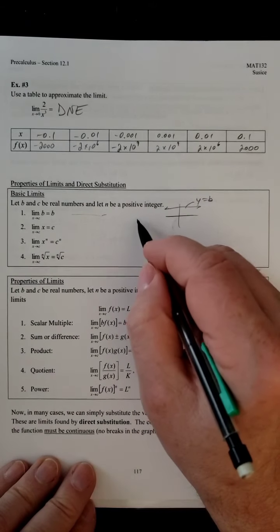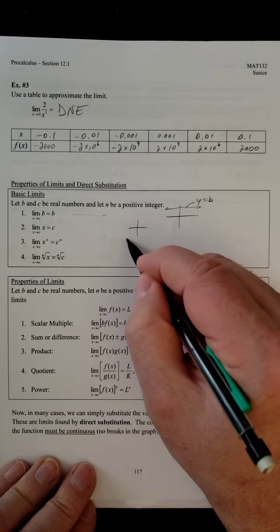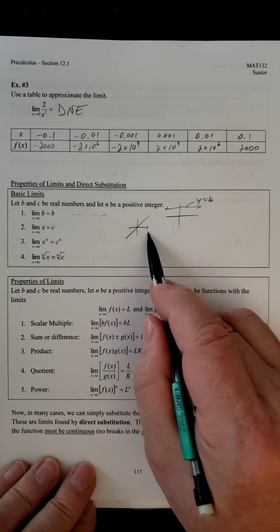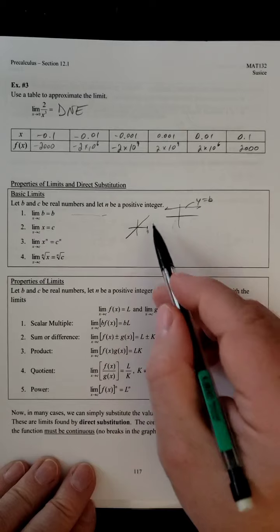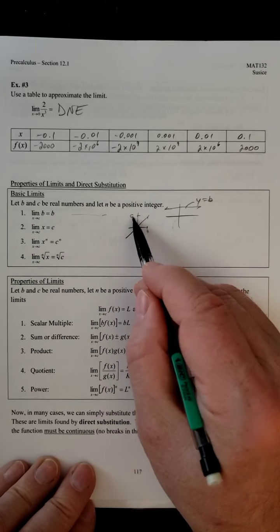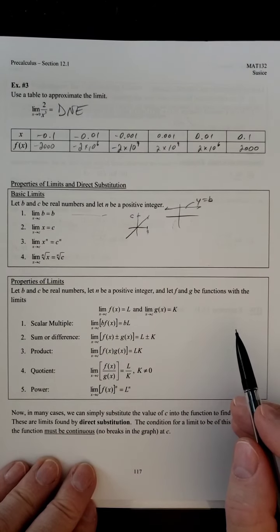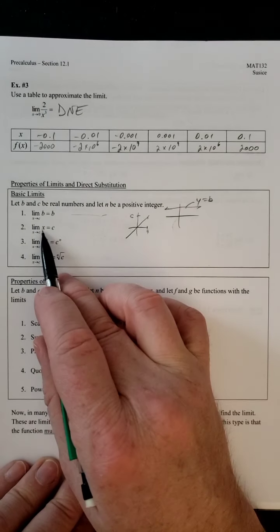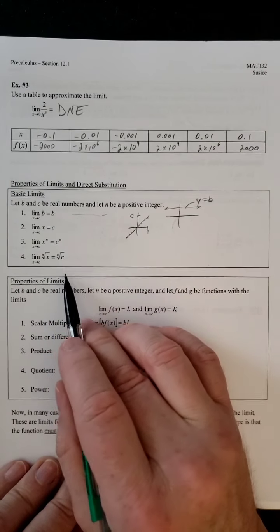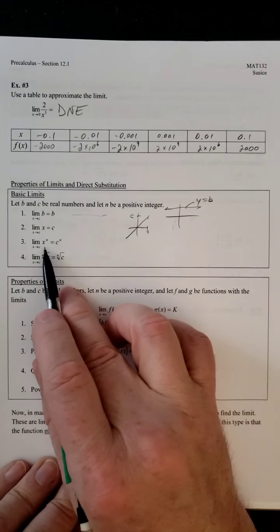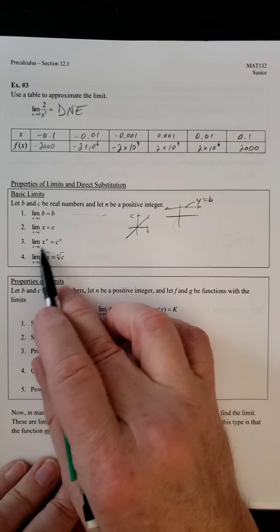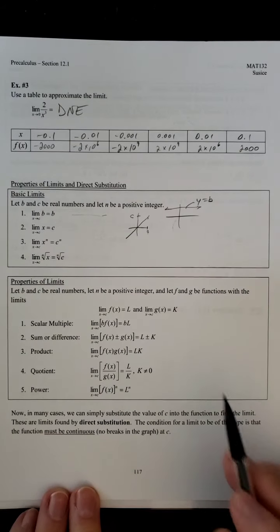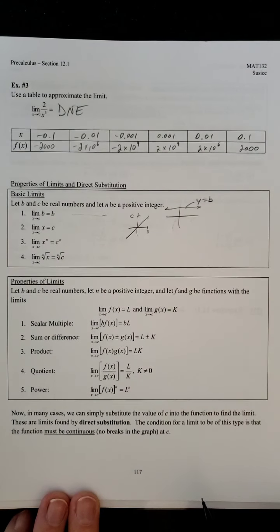If we have the function y equals x, well, we know y equals x is just a diagonal line. So, no matter what value of c you are, if you have a value of c here, you're going to have the corresponding y value is going to be the same value. So, no matter what value of x you have, you're just going to plug that value in, and that will be your limit. Very similar for x to the n power, you're just plugging it in. And for square root, same thing, you plug it in. So, those are some basic limits that we can now use.